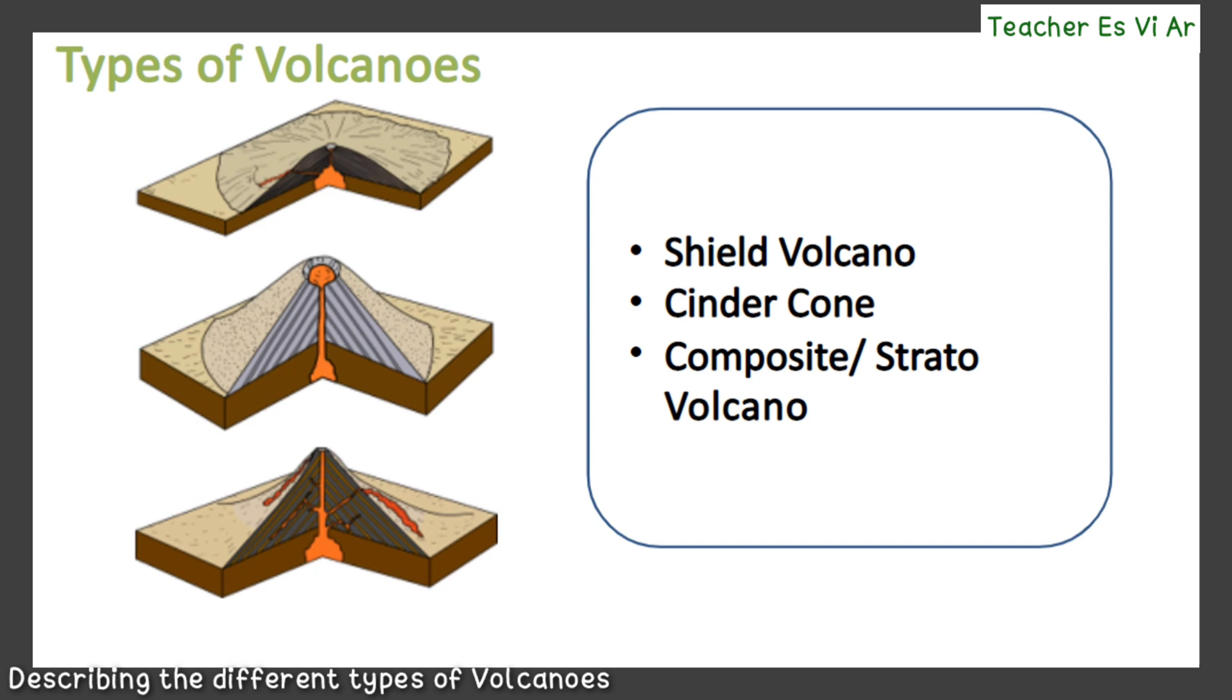The three types of volcanoes are: shield volcano, cinder cone, and composite or stratovolcano. Volcanoes differ mainly in their slopes, formation, viscosity of lava, and intensity of eruptions.